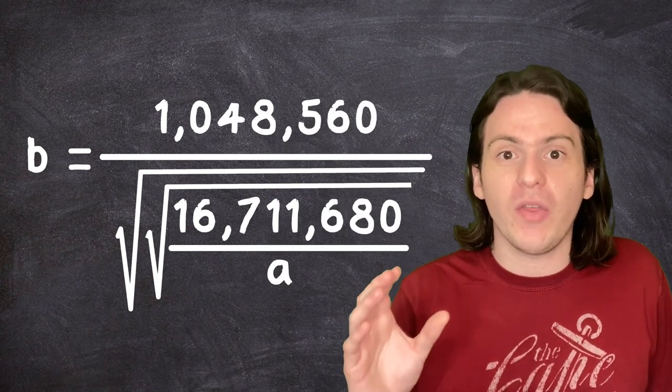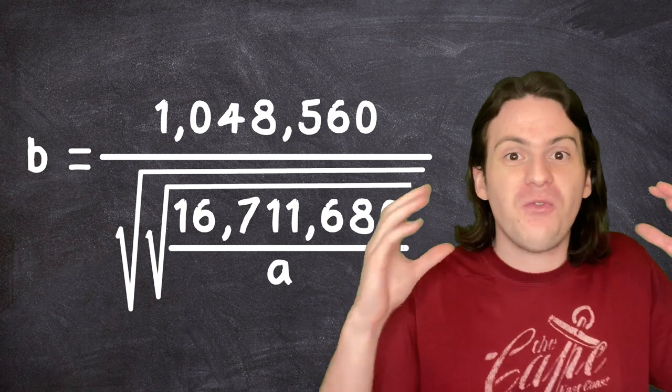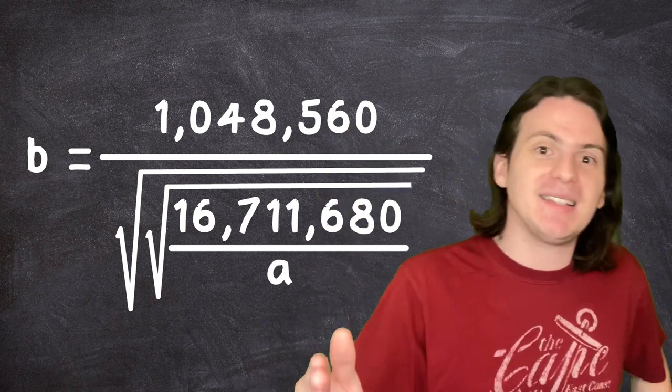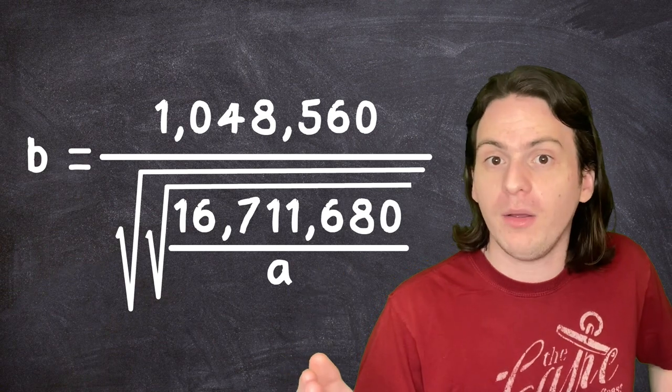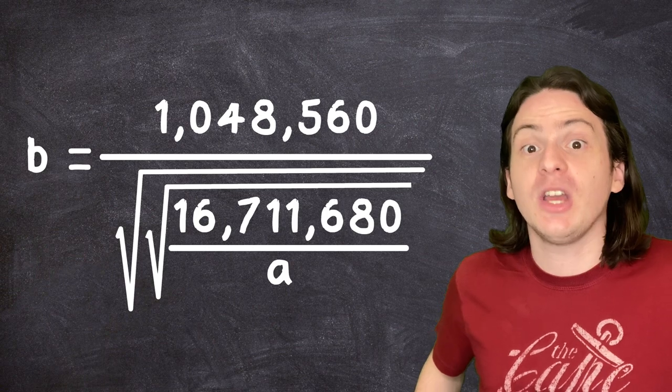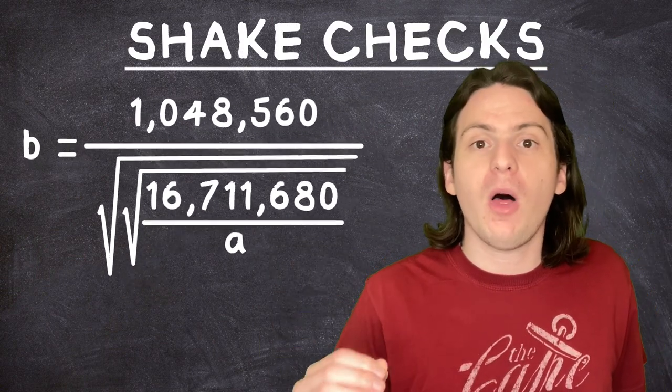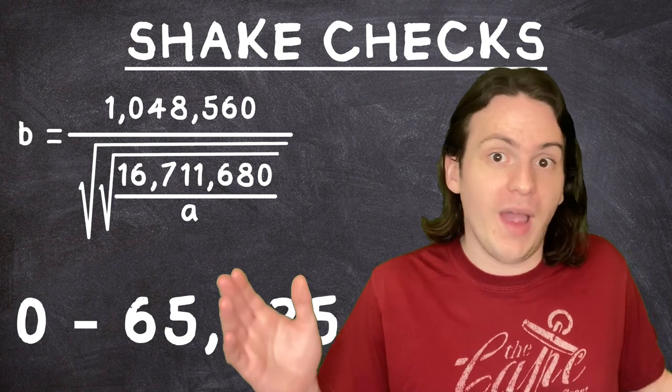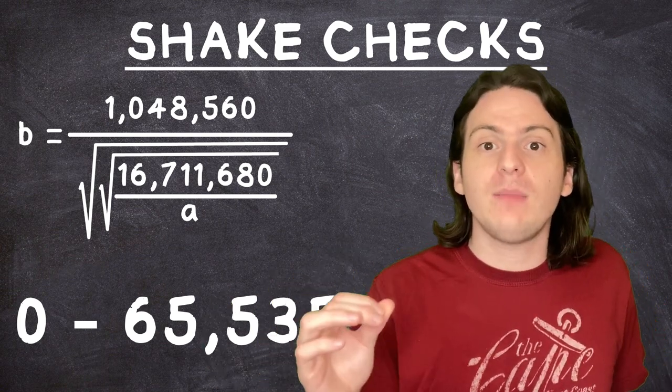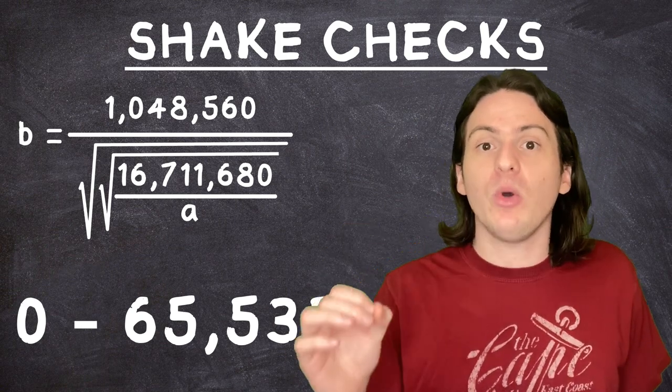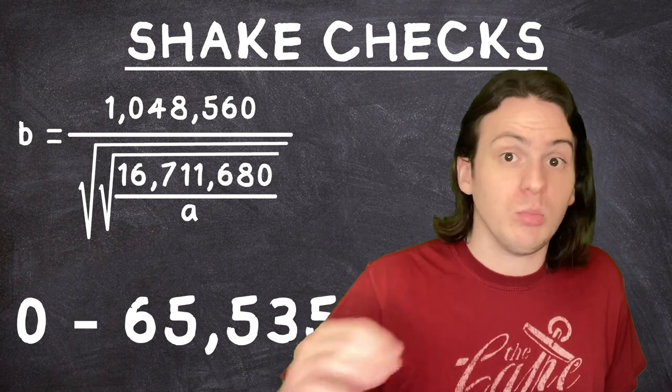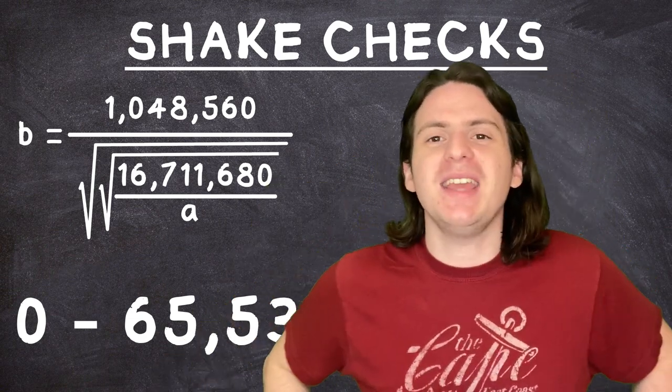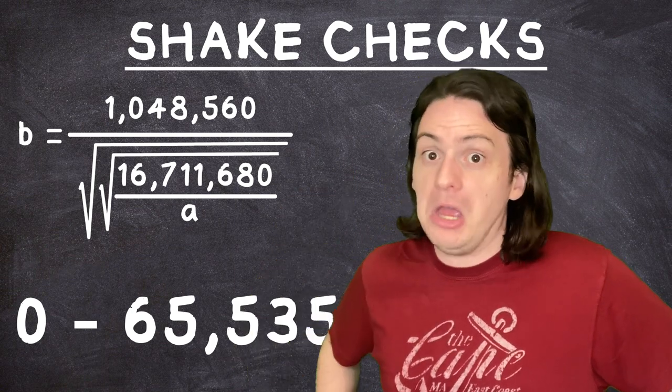You know how Pokéballs do that funny little thing where they'll pretend to shake three times and you think you've finally caught that Mewtwo, but then it breaks out anyway, immediately wakes up and uses Recover to get back to half health, and then you throw your DS and embed it three to four inches into the drywall? Well, that's all thanks to B here, and a little thing called Shake Checks. Whenever you throw a Pokéball, the game generates a random number from zero to 65,535. Why that number? Again, I don't get paid enough to care. If the random number the game generates is greater than or equal to B, the Pokémon breaks out. If it's lower, it shakes. After four successful shakes, you've got yourself a Mewtwo. Now you can go dig your DS out of the wall, but watch out for that fiberglass insulation that might be on there. It can be a pain.